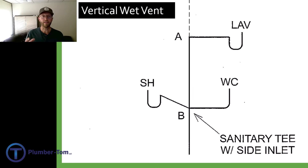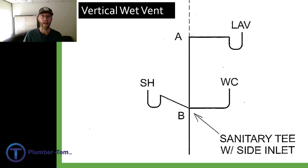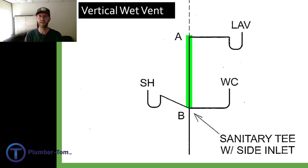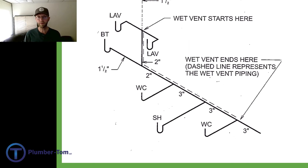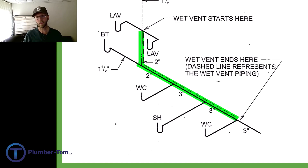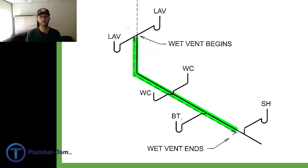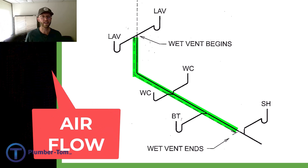Here's an example of a vertical wet vent. A vertical wet vent is just a stack but with the same principle. The stack is coming up, it branches off to the right for the toilet, to the left for the shower, and at the top we have the lav. The lav has a vent and all of the pipe from point A to B is both a drain for the lav and a vent for the other fixtures. The key principle is that when we are wet venting, it is the drain that is also a vent, and that extends all the way down to the last fixture in that wet vent system. That perforated line represents both the drain and the vent as airflow is provided to all of those fixtures.